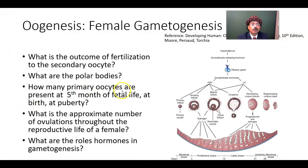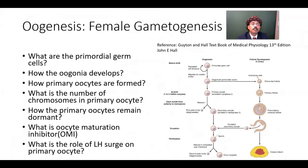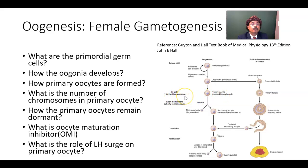How many primary oocytes are present at the fifth month of fetal life? At fetal life it should be around five million oogonia. At birth we have one to two million primary oocytes.